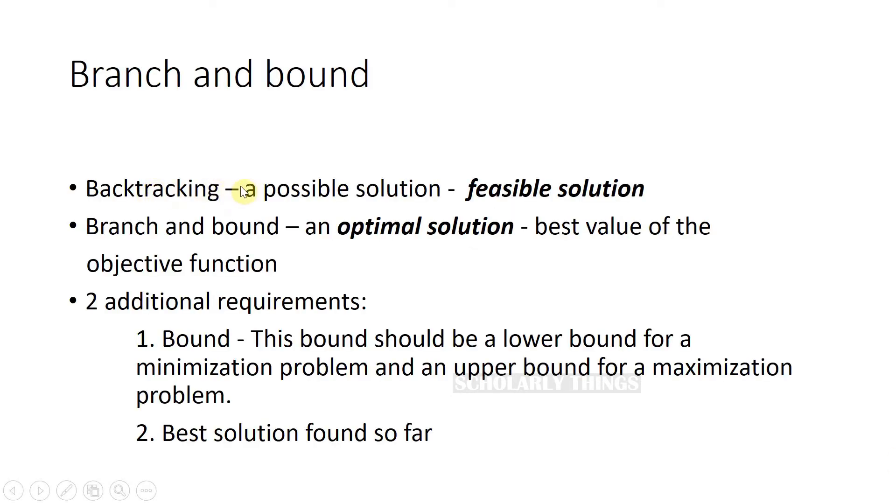In the backtracking process, the idea was to cut off a branch or a node as soon as we found out that it cannot lead us to a possible solution. But we are not optimizing the solution here.